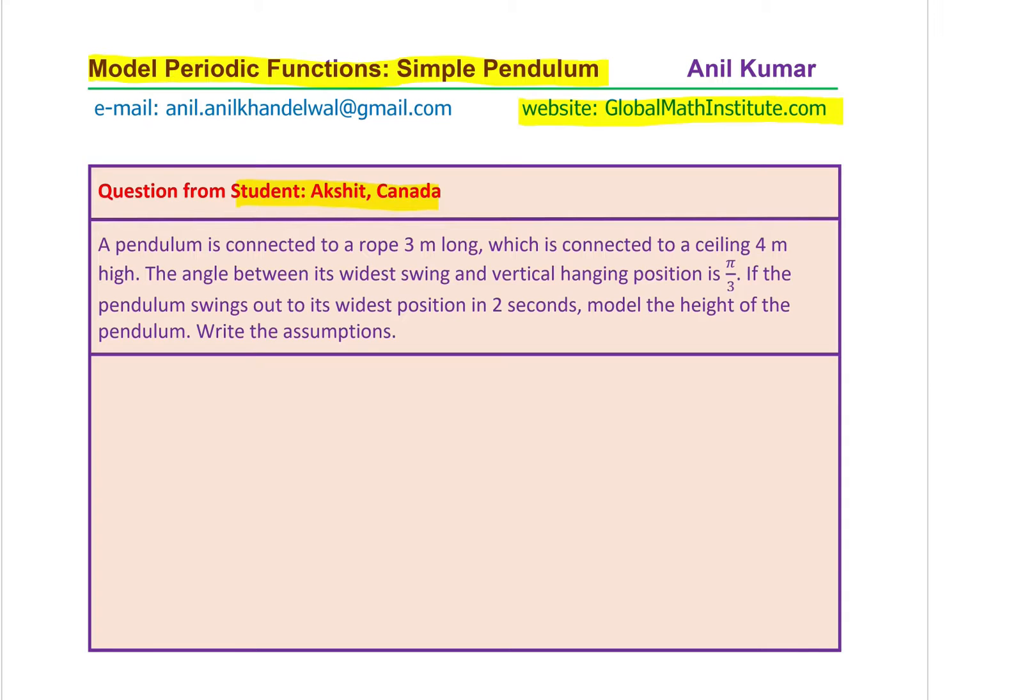The question here is: a pendulum is connected to a rope 3 meter long which is connected to a ceiling 4 meter high. The angle between its widest swing and vertical hanging position is pi by 3. If the pendulum swings out to its widest position in 2 seconds, model the height of the pendulum. Write the assumptions.